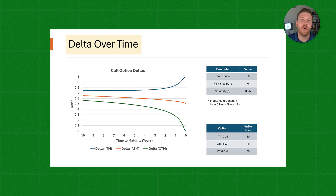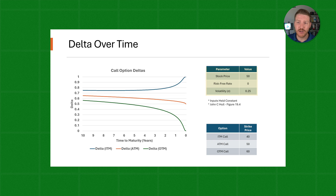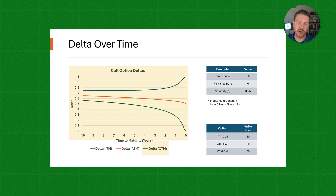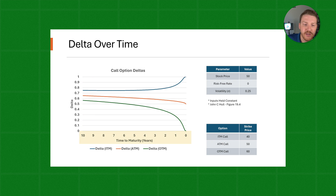Here I have created a graph to show how Delta changes over time. I have used the Black-Scholes option pricing model to price out these Deltas. The stock price, risk-free rate, and volatility are held consistent over time. I have plotted the Delta for an in-the-money call, a Delta for an at-the-money call, and a Delta for the out-of-the-money call.